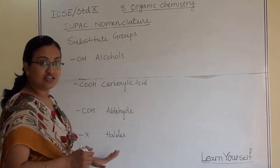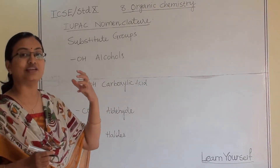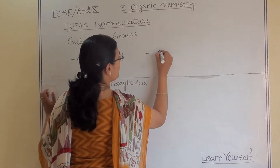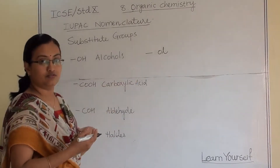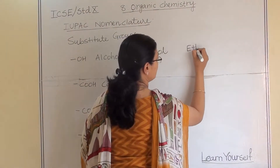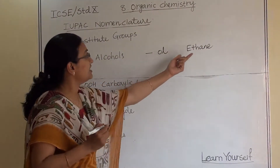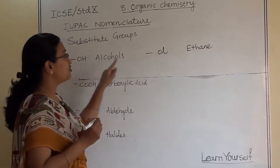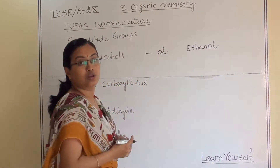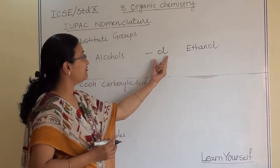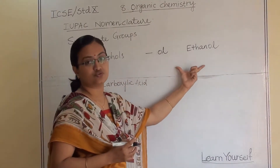What is the speciality of these substitute groups? When OH is attached to any organic structure, the suffix added to the name is '-ol'. For example, ethane — if the OH group is attached to ethane, the name becomes ethanol. This suffix is added because the OH group is attached.